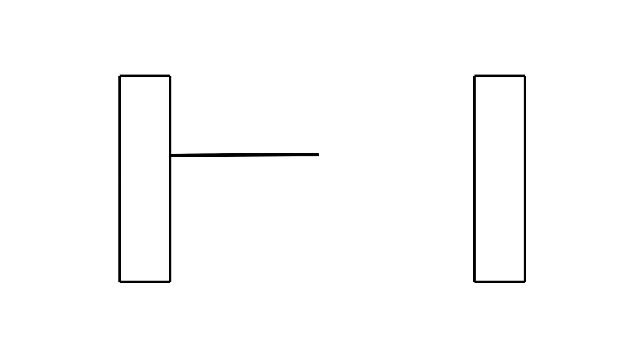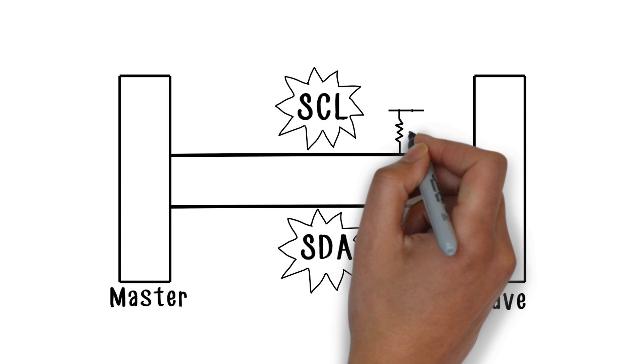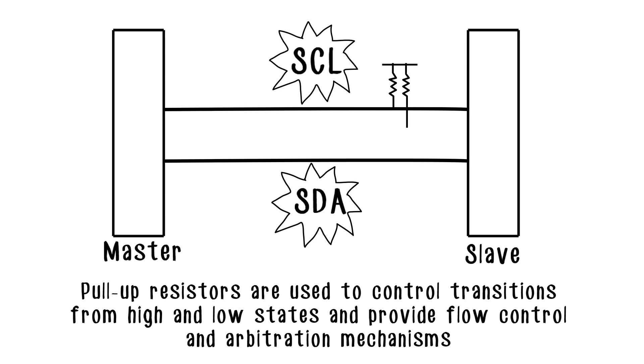A key to flexibility is that because both lines are an open drain design, simple pull-up resistors are used to control transitions from high and low states, and provide flow control and arbitration mechanisms.